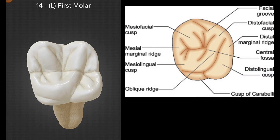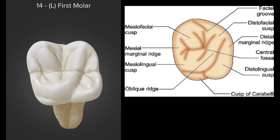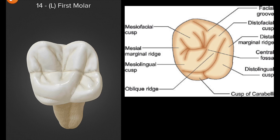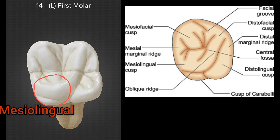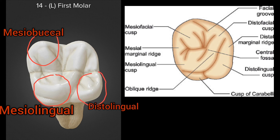From the occlusal surface, the crown is roughly rhomboidal in shape. The buccolingual dimension is greater than the mesiodistal dimension. All four cusps are present: the mesiolingual cusp is the largest, followed by the mesiobuccal cusp, then the distolingual cusp, and the smallest is the distobuccal cusp.